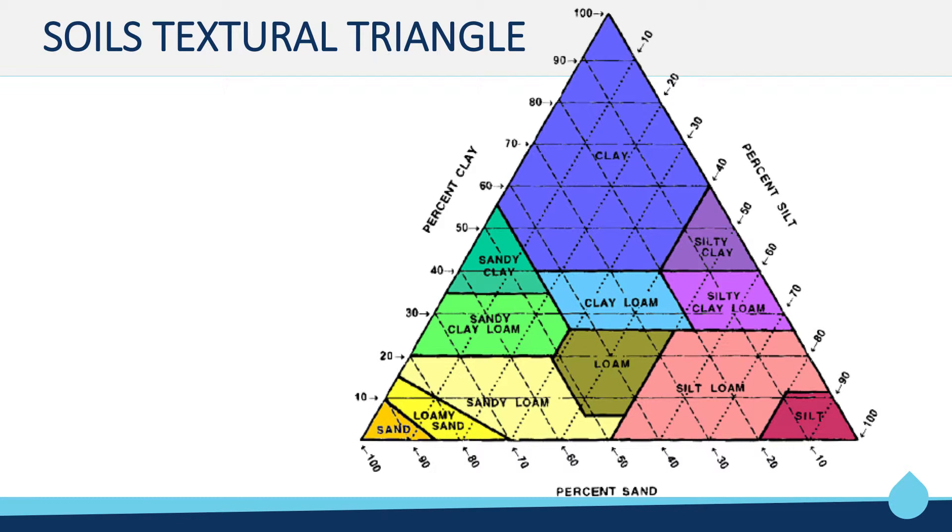For example, if you have 60% sand, 30% silt, and 10% clay, you would follow the percent sand line from the 60% value to where it intersected with the percent silt 30% value. This point of intersection will also meet the percent clay line at 10%. These percentages and their intersection correspond then to a sandy loam soil.